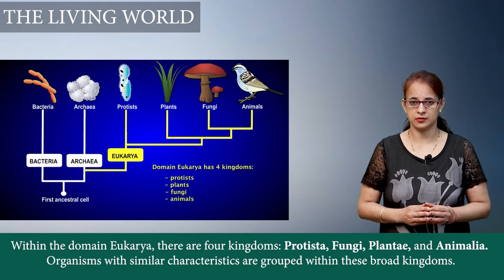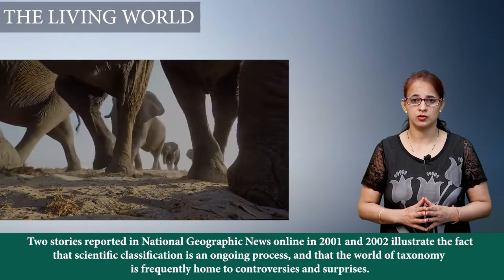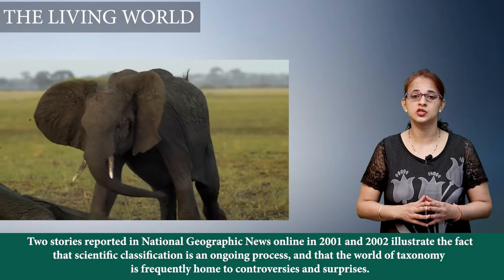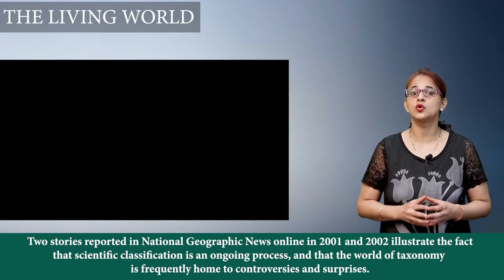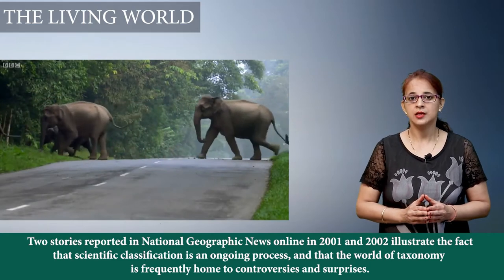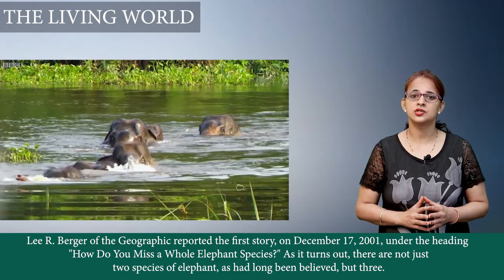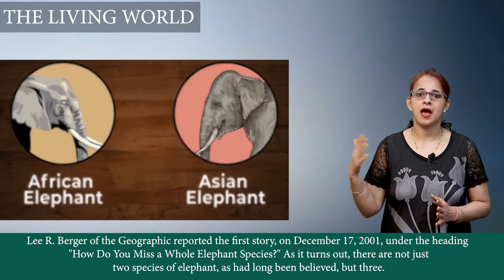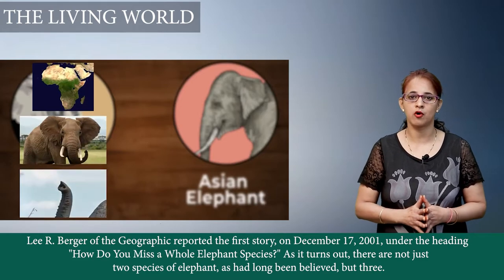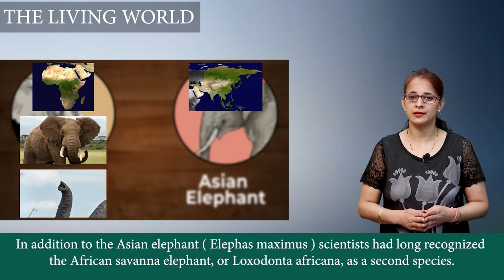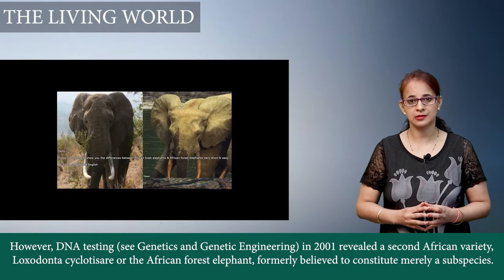Around 2001, a news story was published in the Geographic channel regarding a third species of elephants. This indicates that the classification system — taxonomy — is still an ongoing process full of surprises. It was recognized earlier that there are just two species of elephants: the Asian elephant and the African savannah elephant. But later on, it was found that there was a third variety — the African forest elephant — which had previously been regarded as a subspecies of the African elephant.